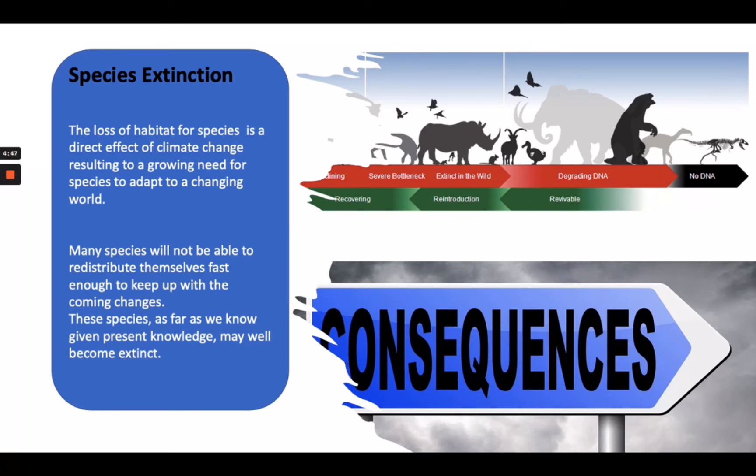If we continue to release greenhouse gases into the atmosphere, there are consequences. One of the major consequences are species extinction. The loss of habitat for species is a direct effect of climate change, resulting in a growing need for species to adapt to a changing world. Many species will not be able to redistribute themselves fast enough to keep up with the coming changes. These species, as far as we know, given present knowledge, may well become extinct.